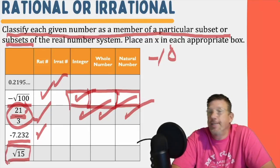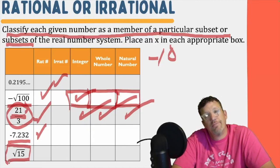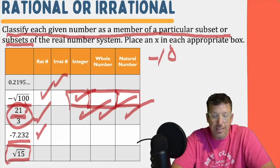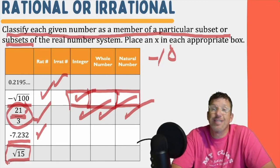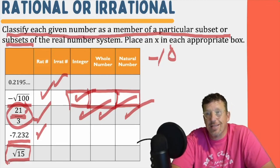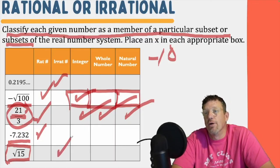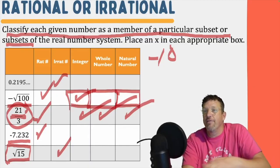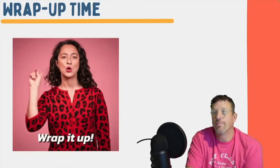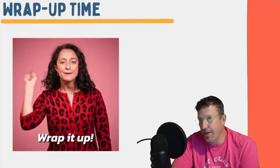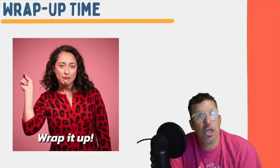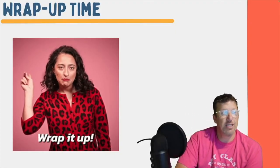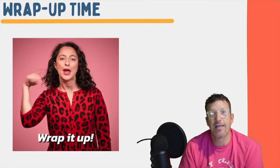Finally, the square root of 15 — is that a perfect square? Nope. 16 is a perfect square because four times four is 16. So this is a radical expression that's not a perfect square, and the rule tells us that it's going to be irrational because that decimal is going to go on forever. You guys are ready to subset with the best of them! Remember to really break down the decimal thing — is it going on forever with no pattern? That's irrational. Does it terminate or have a pattern? That's rational.